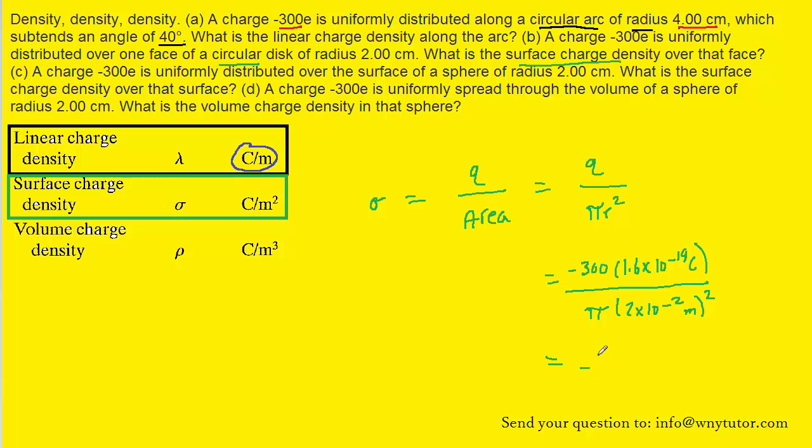And when you work that out, you should get approximately negative 3.82 times 10 to the minus 14. And if you look here, the unit is coulombs divided by meters squared. So this will be the correct answer to part B.